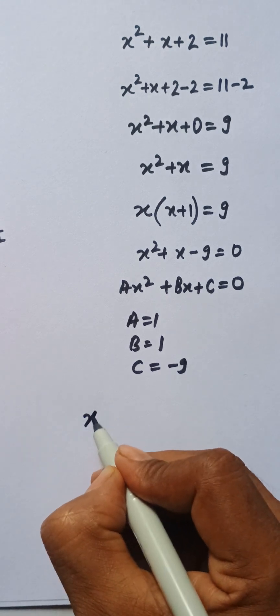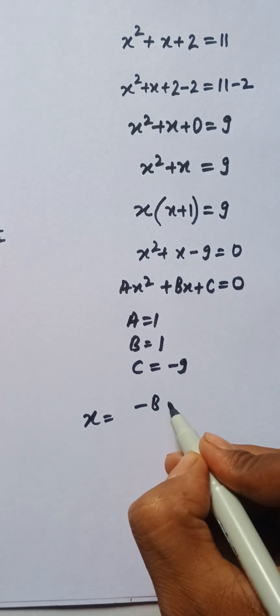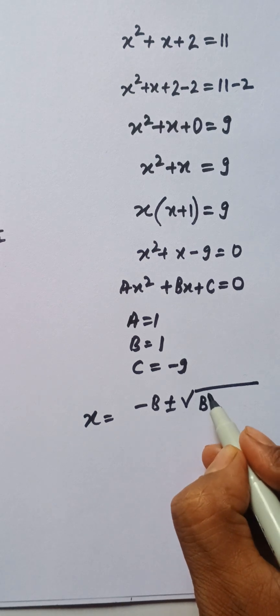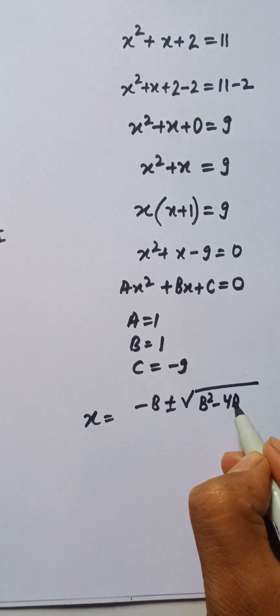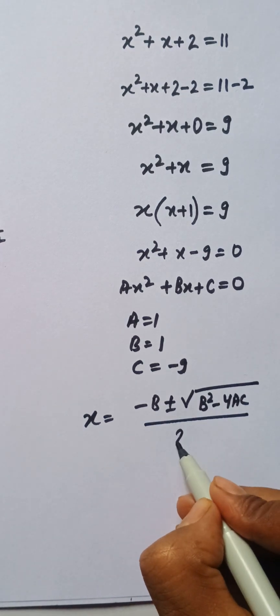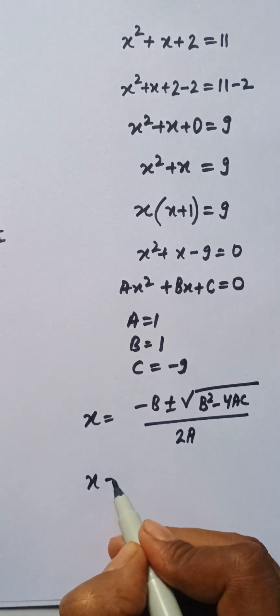So x is equal to—we know that the formula is minus b plus or minus the square root of b squared minus 4ac, divided by 2 times a.